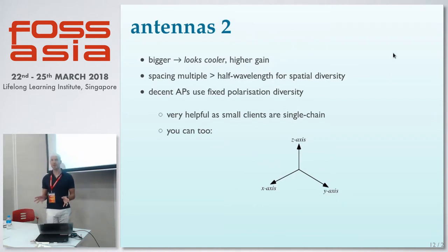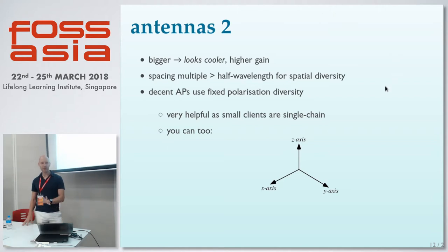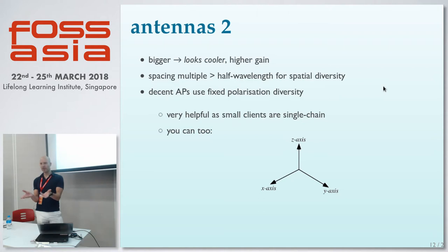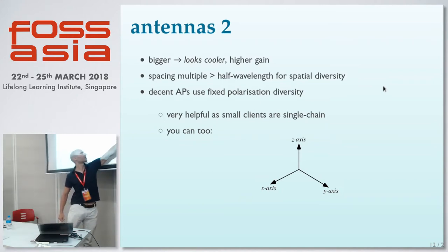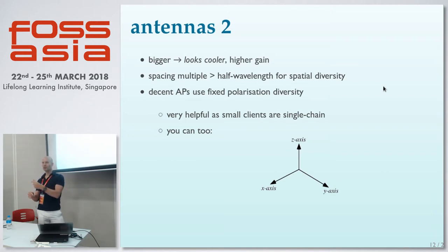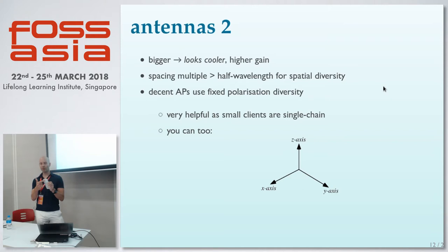The ASUS with three big antennas looks really powerful and feels good, but it's almost certainly much worse. What you can do is make sure the antenna spacing is more than half the wavelength, and they're normally fixed so that's fine. You can also arrange them in an orthogonal way — if you imagine the three antennas at the back of your router, put one up, one back, one sideways — you then polarize the signal in different orientations, which allows you to communicate with devices that have only one antenna in one axis. That definitely improves communication.